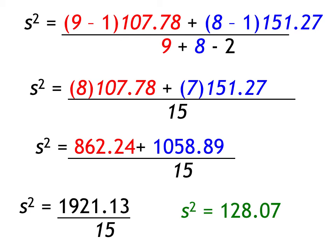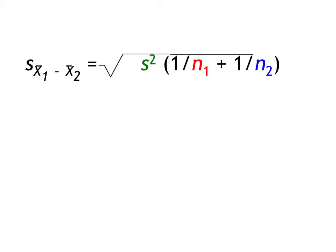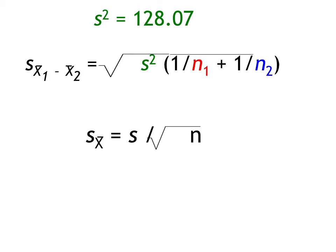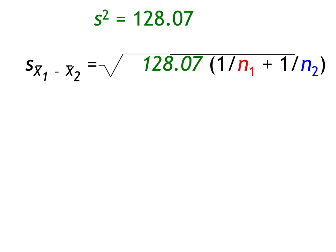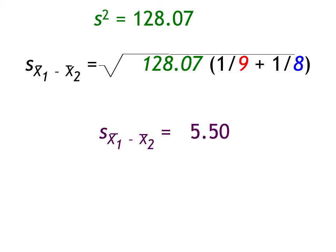Now the next step: I've got my pooled variance and I simply need to turn that into the standard error. The standard error for the difference between the sampled means takes into account the sample size. Remember when we got the standard error of the sampled means for just one sample group when we didn't know the population variance? We have the same idea here — you adjust the standard error for the sample size by replacing the terms with the n values. We find that the standard error is 5.50.